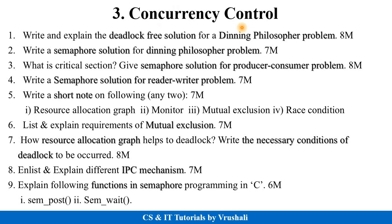The next topic is concurrency control. They will ask any one question from three questions: write and explain a deadlock-free solution for the dining philosopher problem, or write a semaphore solution for the dining philosopher problem, or what is critical section and give a semaphore solution for the producer-consumer problem. They will ask any one question compulsorily for 7 to 8 marks, so prepare all three problems: dining philosopher, producer-consumer, and reader-writer. The fourth question is: write a semaphore solution for the reader-writer problem.